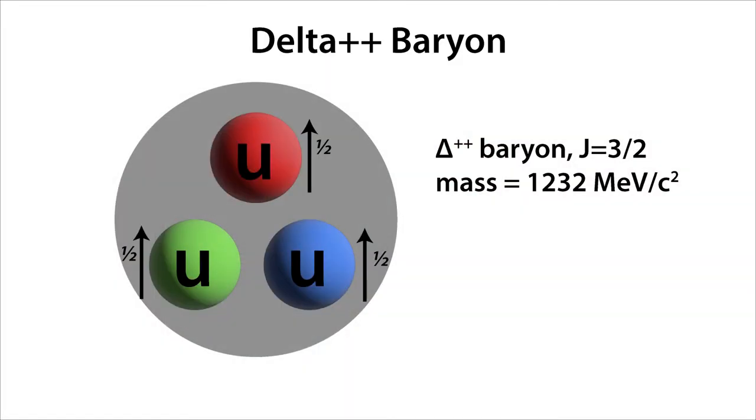The other problem with the model was trying to explain the delta double plus baryon. This had a spin of three halves, and quarks have a spin of a half. So the quarks had to be all in the same spin state, and the delta double plus baryon was made of three up quarks. So this meant that all three quarks were in the same state, but quarks, like electrons, obey the Pauli exclusion principle. So this was a problem.